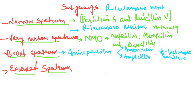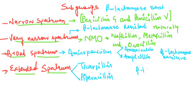The fourth subgroup is the extended spectrum penicillin. In this group we have penicillins like ticarcillin and piperacillin. These extended spectrum penicillins are also beta-lactamase sensitive.